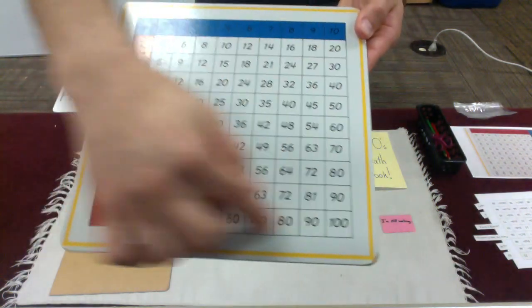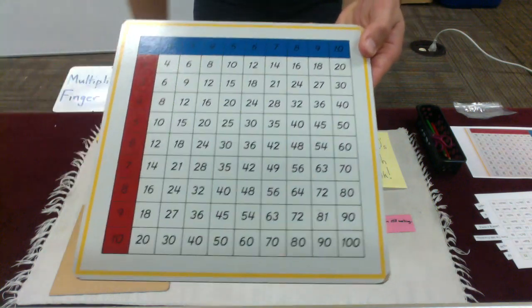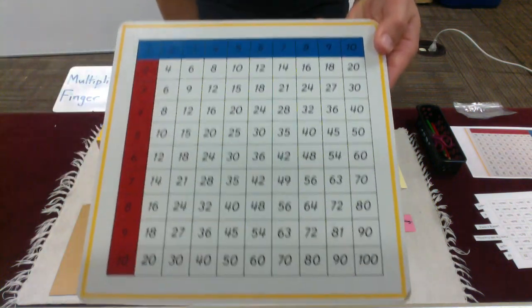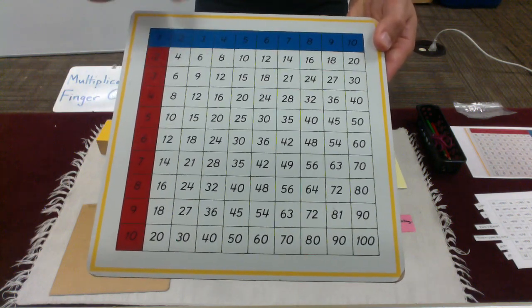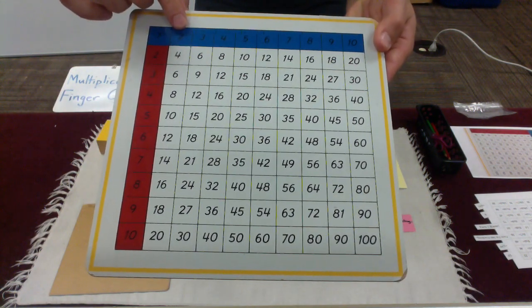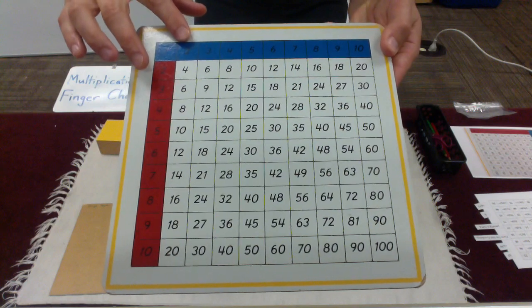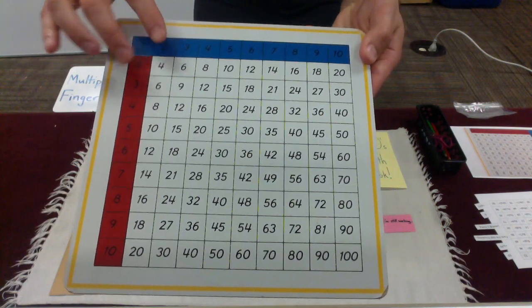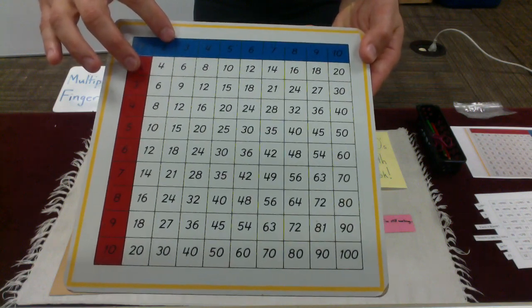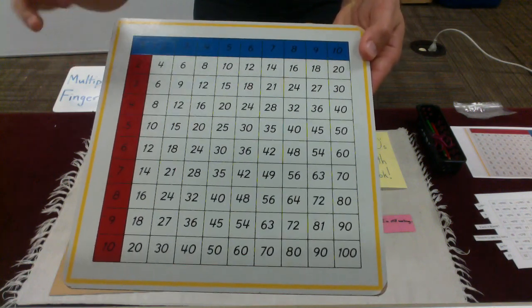Now, the numbers here in the center, these are going to be our multiplication products. So for example, if I was going to multiply 2 times 2, I would find 2 along the top and 2 along the side, and I will slide to where they intersect. So 2 times 2 is 4.